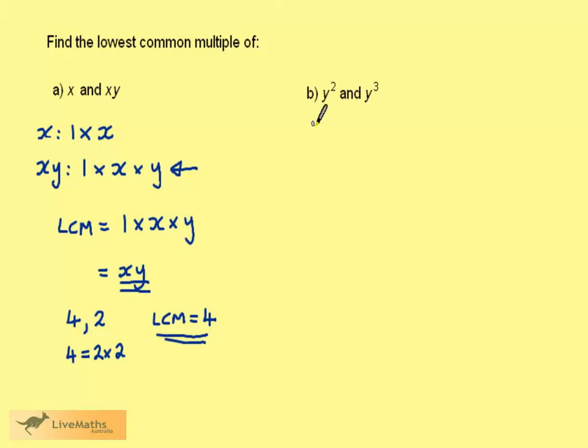Now let's consider y squared and y cubed. y squared is 1 times y times y. And y cubed is 1 times y times y times y.